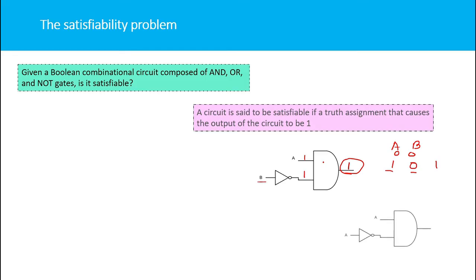Now consider this circuit where both inputs are a, but we are negating a using a NOT gate before the AND gate. If you assign any value to a, the output is never going to become one, so we say that this circuit is not satisfiable.